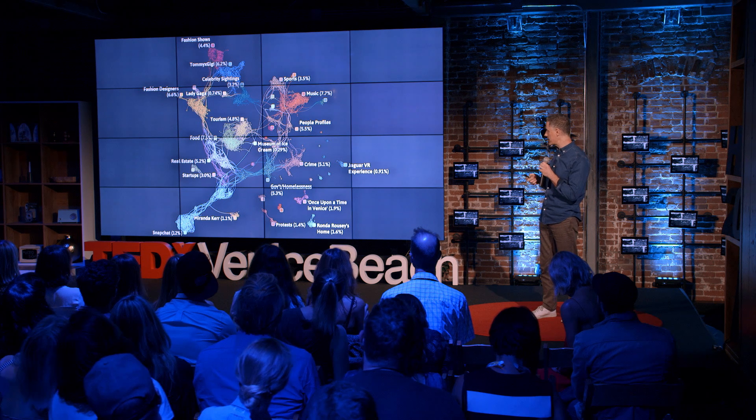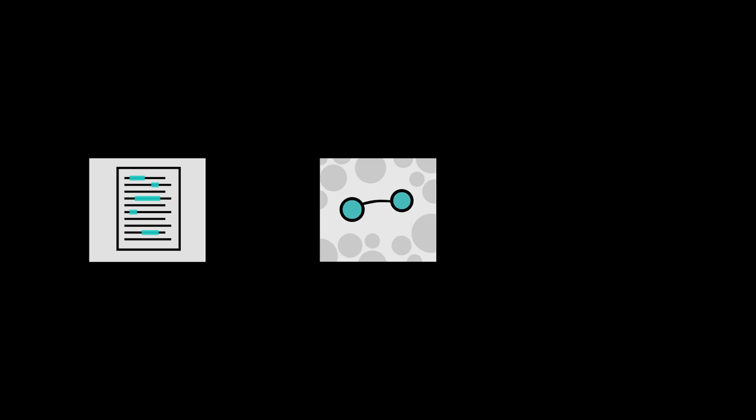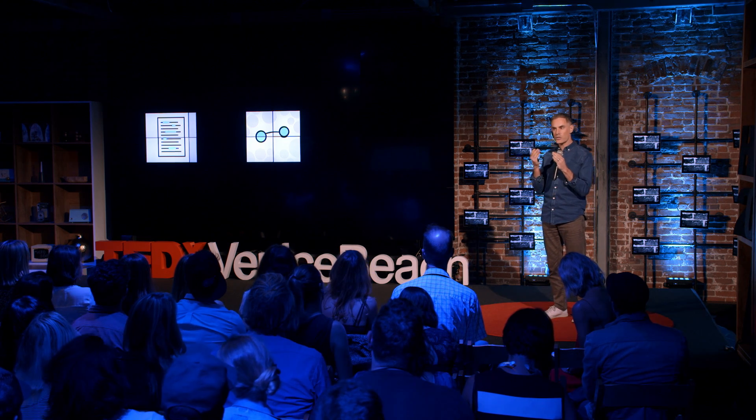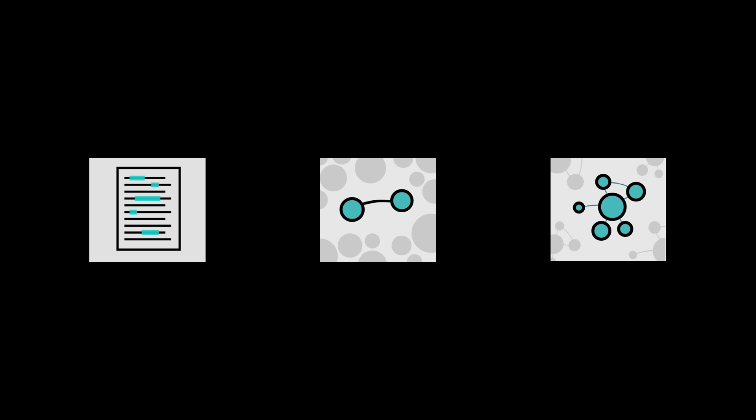So how do we get to a map like this? It starts with natural language processing. We use software that essentially reads everything it can find about Venice Beach while noting key events, phrases, words, and other significant entities. Then it compares every individual piece it reads to every other piece it can find. The pieces are represented by individual circles or nodes. Where it finds two pieces that share a lot of language in common, it draws a link between them. The software also seeks to understand which pieces have thematic similarity — meaning they're about the same overall topic.